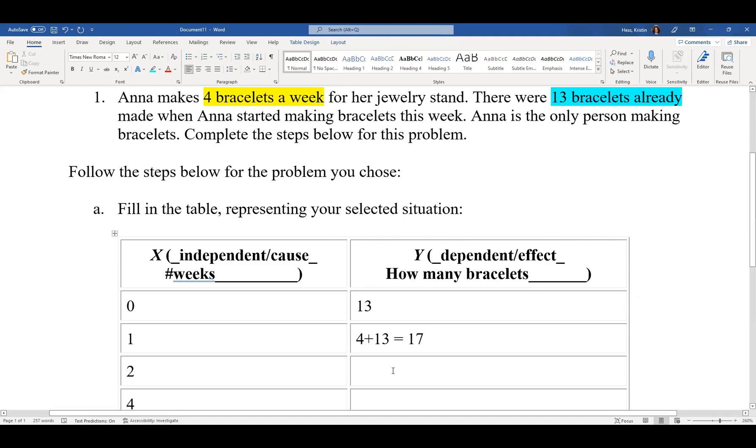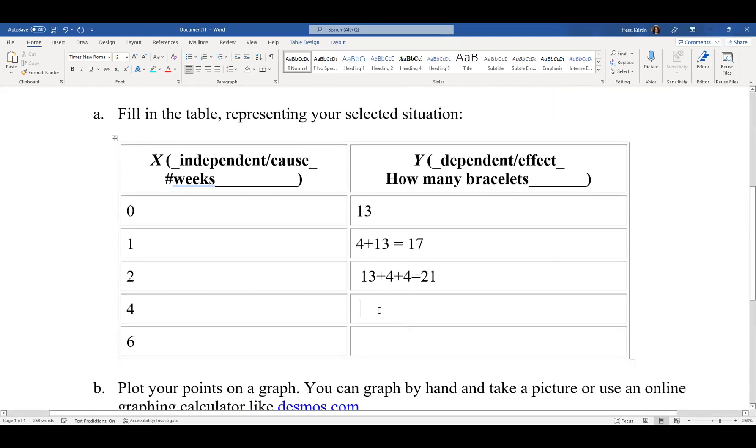And we get to two weeks. She had the initial 13, plus the four from the previous week, plus the four from the second week. So 13 plus four is 17, 17 plus another four is 21. So now when we go to the fourth week, she will have four weeks of making four bracelets each, plus the original 13. So four times four is 16, plus 13 is 29.